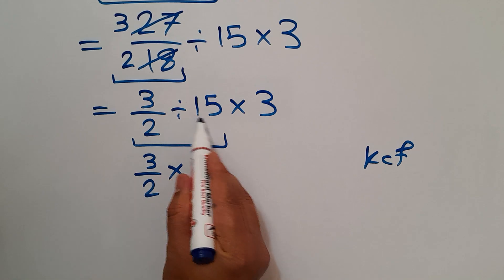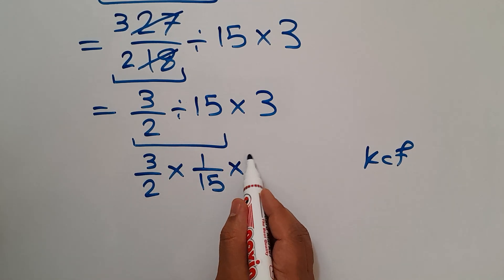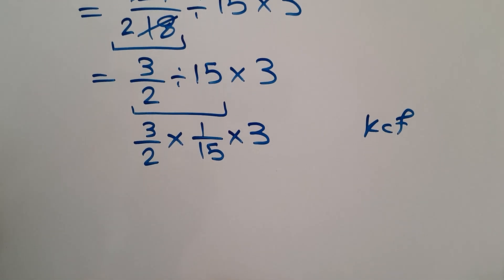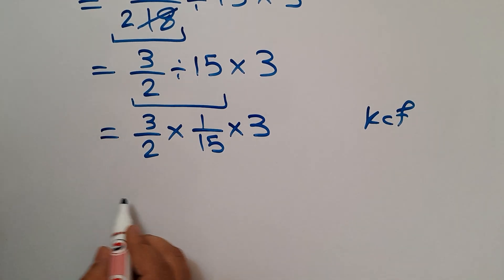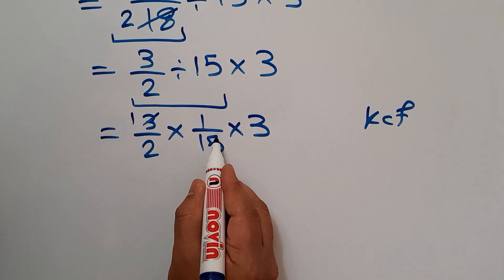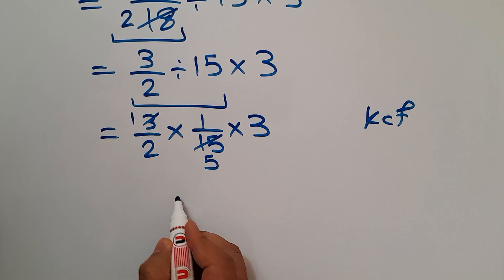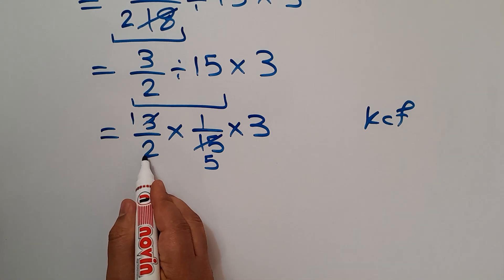And here we have times 3. Now 3 divided by 3 gives us 1, 15 divided by 3 equals 5. So we have 1 over 2 times 1 over 5 then times 3.